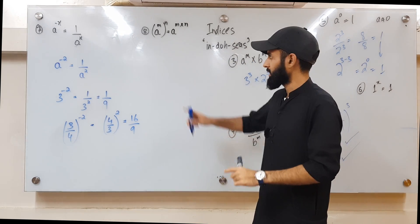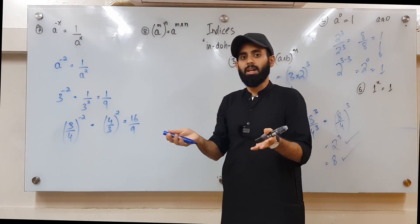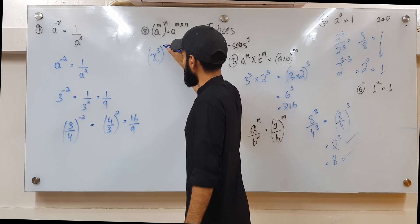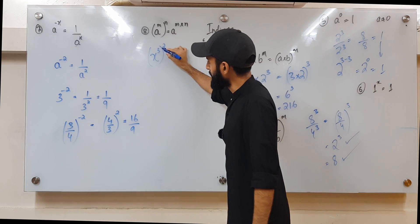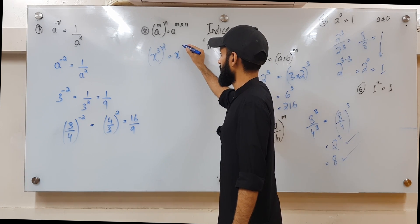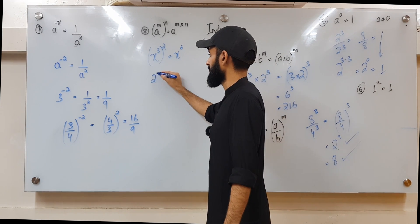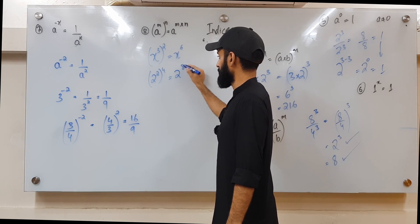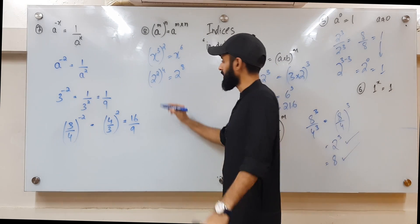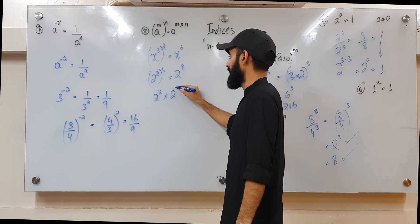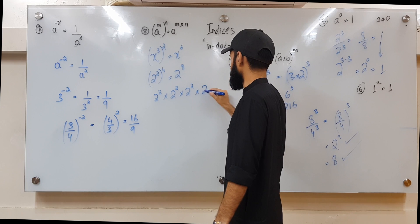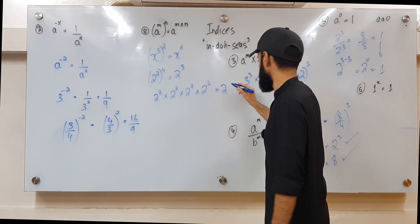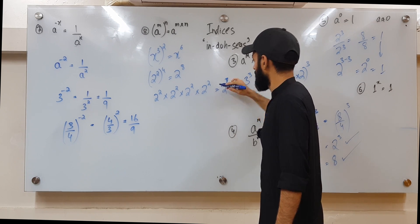Rule number eight: if you have a base raised to a power and all of that is raised to another power, the two powers get multiplied. For example, x cubed all squared gives x to the power 6 — since 3 times 2 is 6. With numbers: 2 squared raised to the power 4 gives 2 to the power 8. This is because 2 squared multiplied by itself 4 times means adding 2 four times — 2 plus 2 plus 2 plus 2 equals 8.